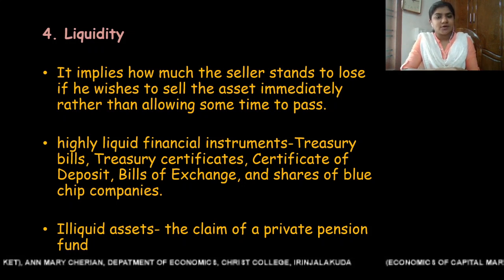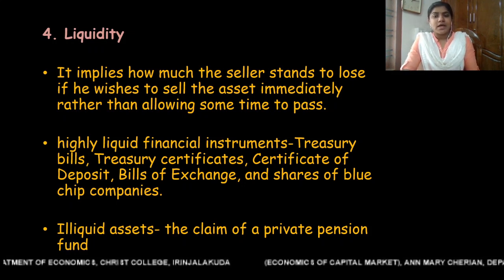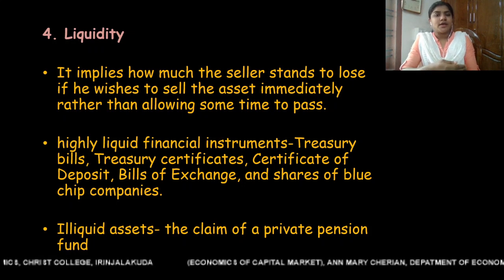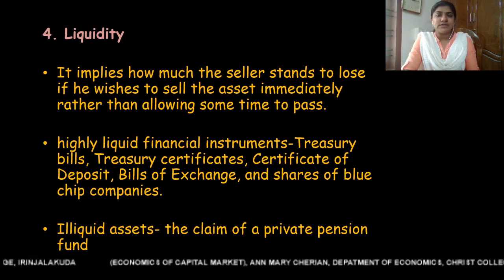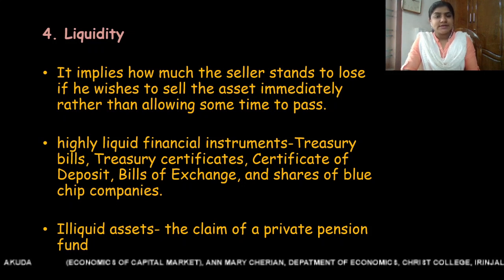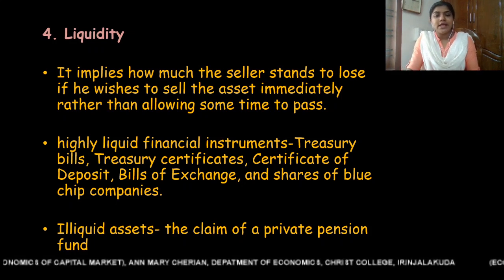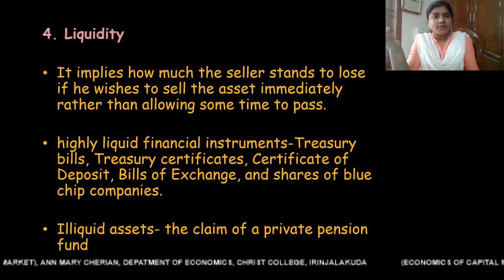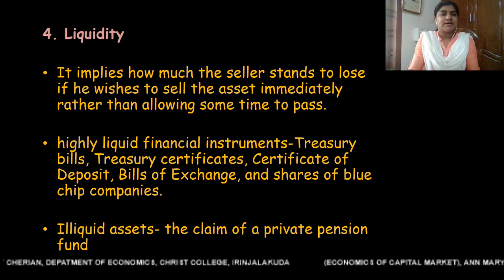Certain financial instruments are highly liquid — for example, treasury bills, treasury certificates, certificates of deposit, bill of exchange, and shares of blue chip companies. They can be easily traded in the financial market and converted into cash. Whereas certain financial assets are considered illiquid, for example the claim of a private pension fund, which cannot be easily converted into cash and can only be converted at the time of maturity.